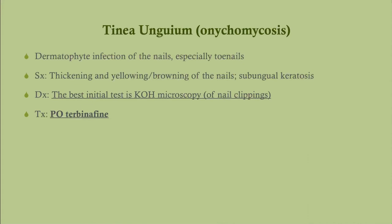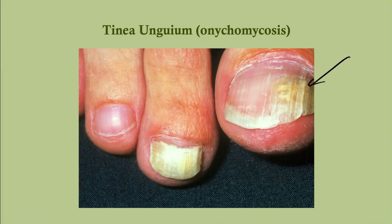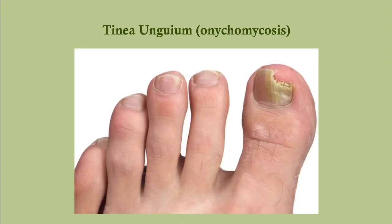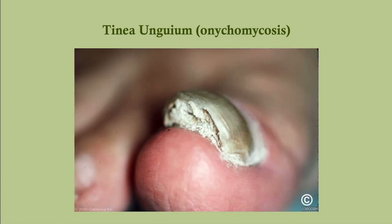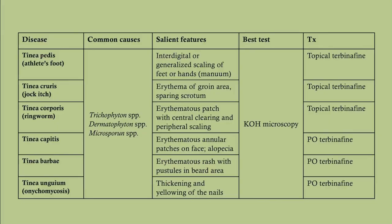Tinea unguium, also called onychomycosis, is a dermatophyte infection of the nails — especially the toenails, because they're in a dark, damp environment inside shoes. It presents with thickening and yellowing of the nails, and subungual keratosis. Diagnosis is the same. Treatment is oral terbinafine — any infection involving hair or nails requires oral treatment. Severe infection can compromise nail structure, causing nail breakage.